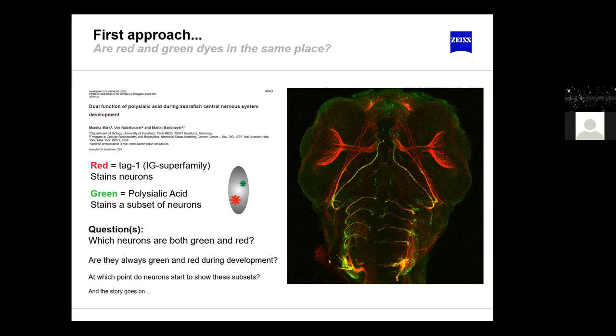The green pixels in this image can be two things: the dimmer green ones can be ascribed to autofluorescence, but there is a stronger green signal that represents neurons in a certain stage of development, stained with polysialic acid. The question is: of all the neurons, which ones are in this particular stage of development? Those are the ones that will be green and red, and in an image they appear in a yellowish tone.